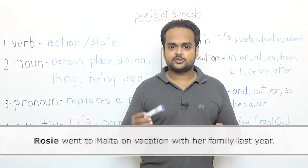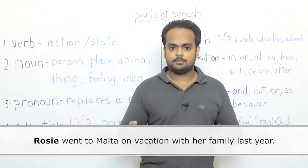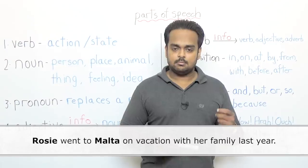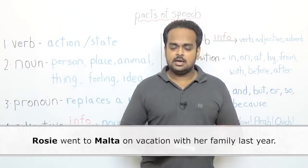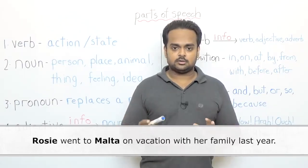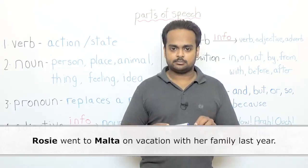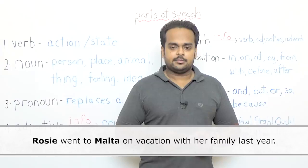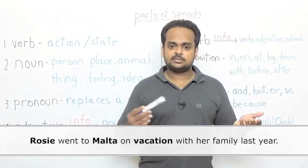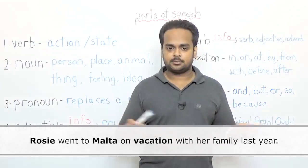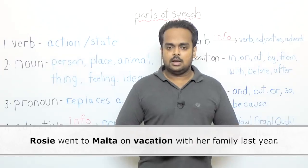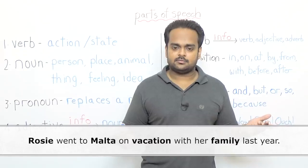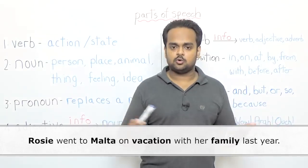Well, the first noun is Rosie. It's the name of a person. The second noun is Malta. Malta is the name of a place. It's actually a beautiful small little island country in Europe. The next noun is vacation. Vacation is the name given to a type of trip that people take. And the noun after that is family. What's a family? A family is a group of people who are related.